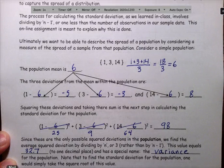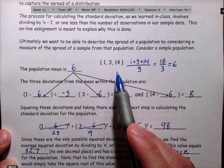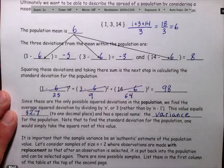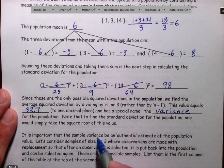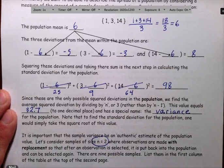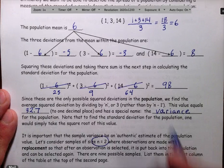So in order to explain that, we are going to take samples from our population. Our population is 1, 3, and 14, and we are going to take samples of size 2. And as we take these samples, we are going to take these samples with replacement.